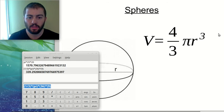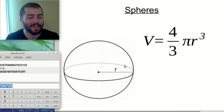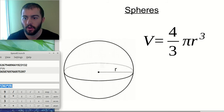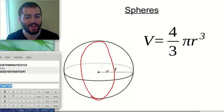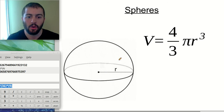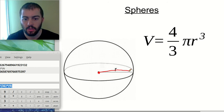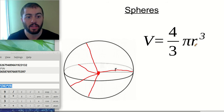Our last shape is a sphere — anything spherical like a basketball or a marble. A sphere is basically a bunch of circles all the way around; you can draw a circular equator through it in any direction. The only dimension we need is the radius, because the radius is the same in every direction all the way around. The formula is four-thirds times pi times radius cubed.